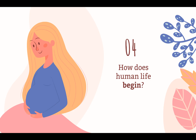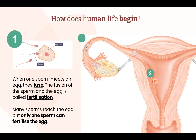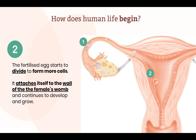Let's move on to our next guiding question. Have you ever wondered how human life begins? The nine-month journey leading to the birth of a baby begins when a male and a female mate. When one sperm meets an egg, they fuse. The fusion of the sperm and the egg is called fertilization. Fertilization occurs in the fallopian tube, as seen in the diagram. Many sperms reach the egg, but only one sperm can fertilize the egg. The fertilized egg starts to divide to form more cells. It attaches itself to the wall of the female's womb and continues to develop and grow.